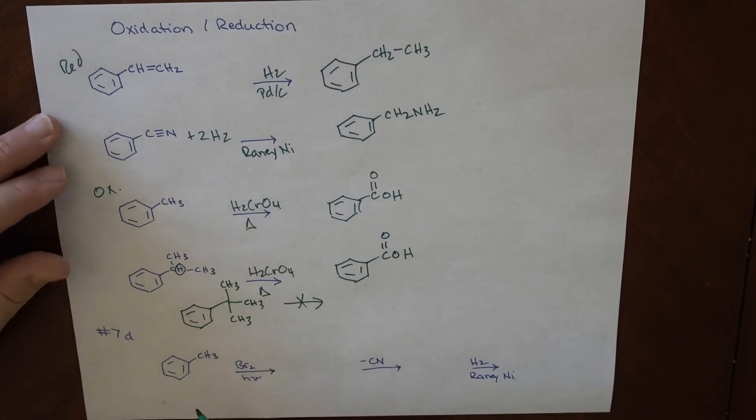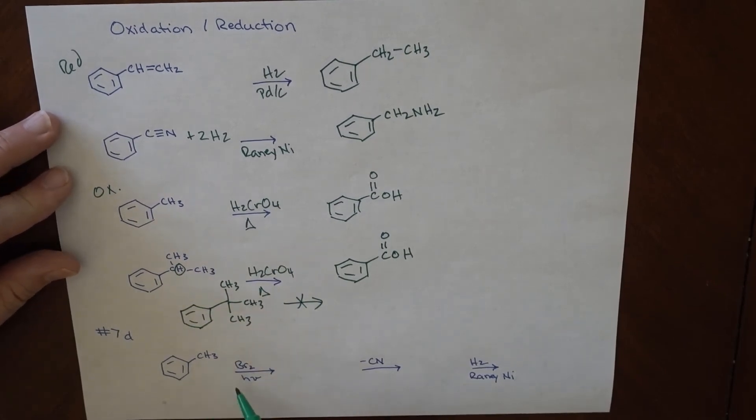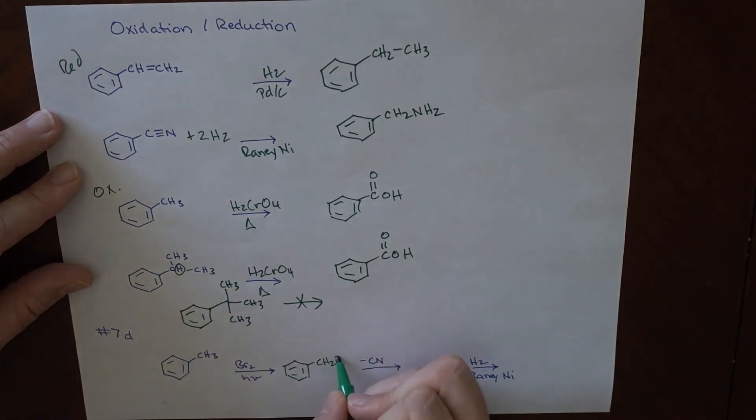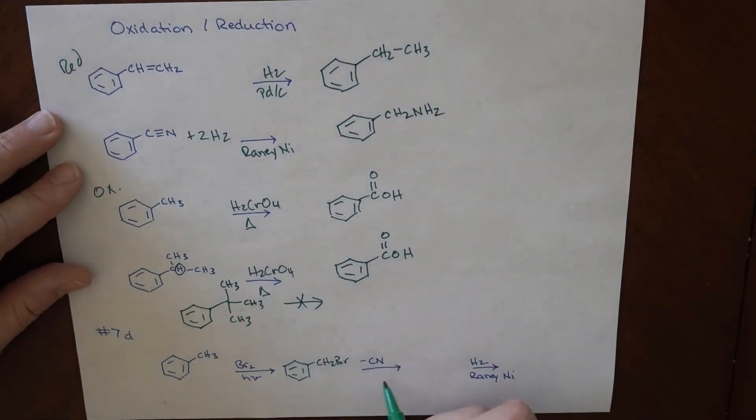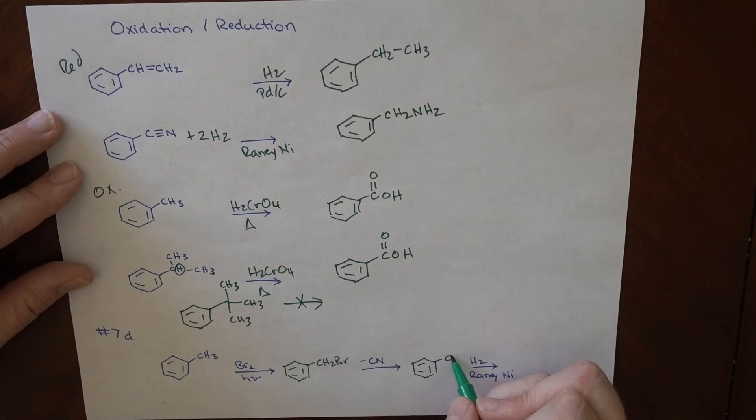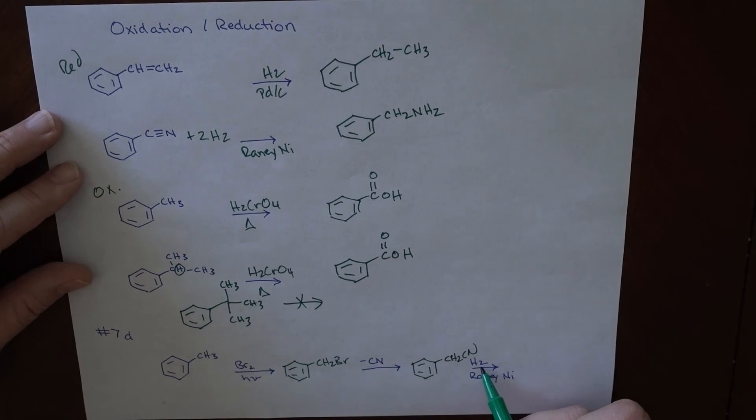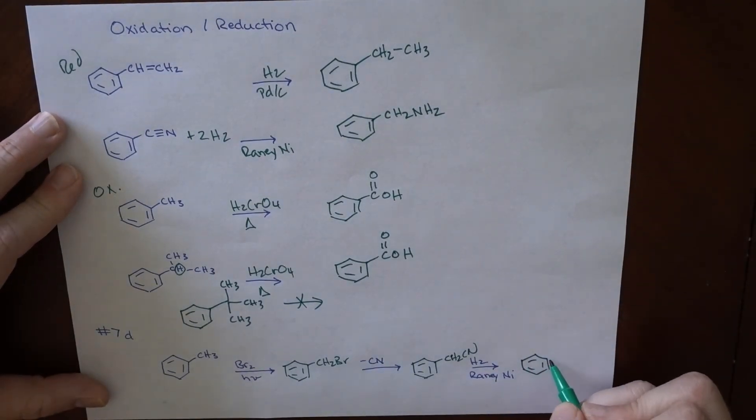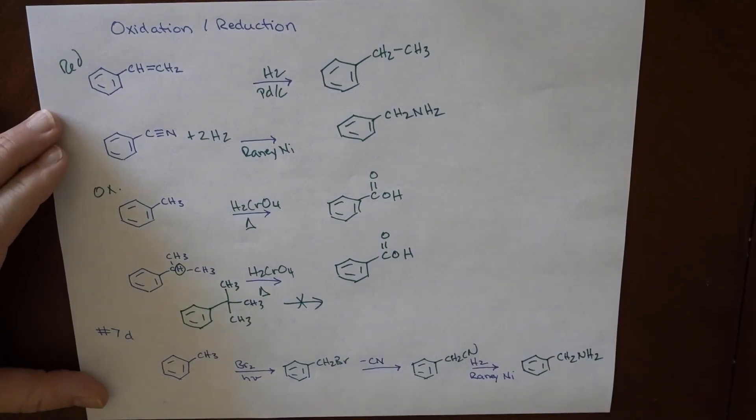So if we were to look at question 7D, if we were to brominate this in the presence of light, that would go there. And then we substitute this off. This would go in the presence of CH2CN. This would go in the presence of that. And then we hydrogenate it. And we can arrive at that.